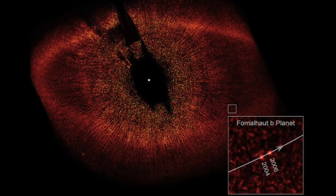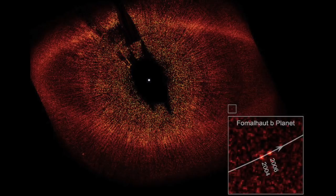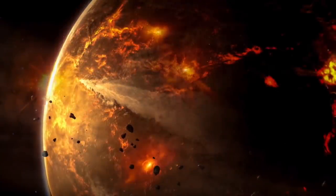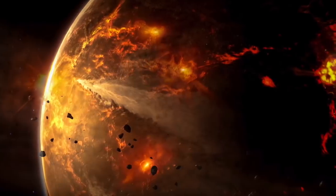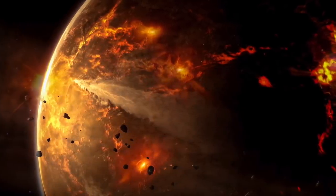NASA said the following on their website: This false color composite image taken by the Hubble Space Telescope reveals the orbital motion of the planet Fomalhaut B. Based on these observations, astronomers calculated the planet is in a 2,000-year-long highly elliptical orbit.